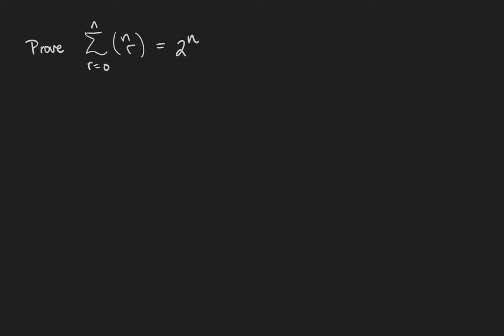The proof is in noticing that the sum is the same as the sum from 0 to n of n choose r times 1 to the n minus r times 1 to the r.